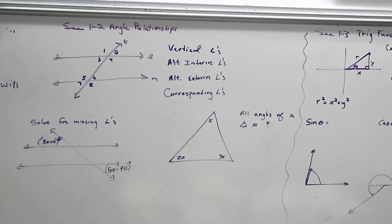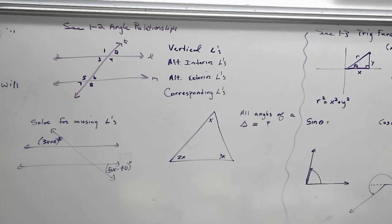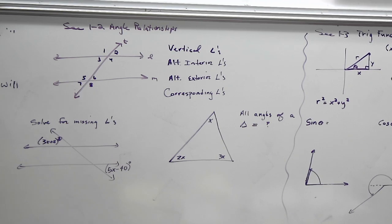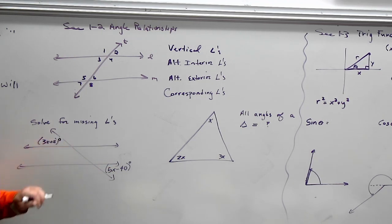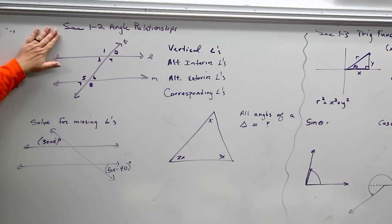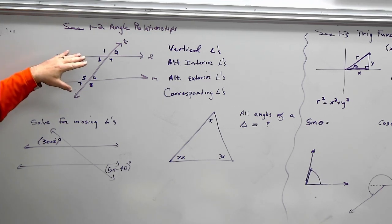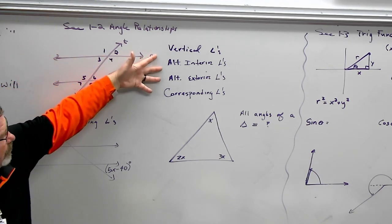In section 1-2 they talk about angle relationships. I've always been a little torn on whether we really need to go over this because a lot of you probably already understand that when two angles look the same, they are the same. But it's important to know why they're the same and what property allows us to do that. In section 1-2, called angle relationships, these are the four things we need to know.